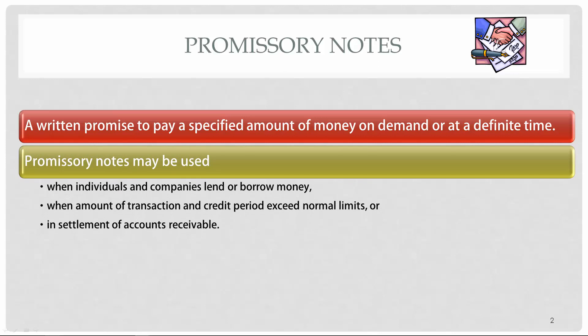Promissory notes are issued either when one individual or company wants to lend money to another or borrow money from another, or when a certain transaction — either the time period or the amount — exceeds normal business operations and so they'll issue a note. They're also issued when one company owes another money and they want to continue doing business, so they'll issue a note to settle that open balance.